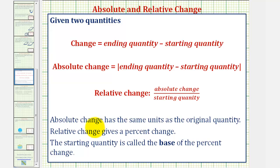So the absolute change, as well as the change, has the same units as the original quantity. The relative change gives a percent of change. And then the starting quantity is called the base of the percent change.